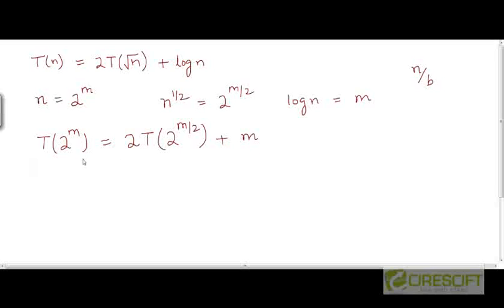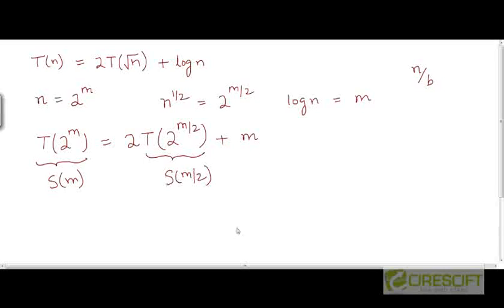Now in this form, the recurrence is closer to the sort of recurrences that we have been solving. In particular, if we treat T(2^m) as some function S(m), then this becomes S(m) equals 2 times S(m/2) plus m.